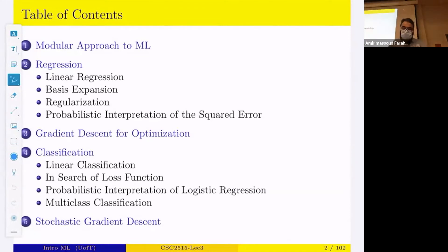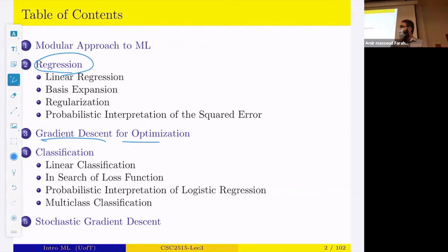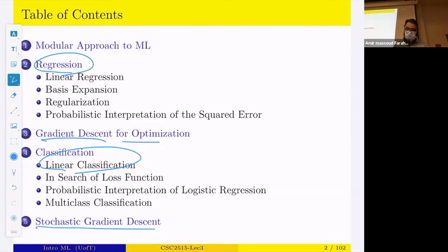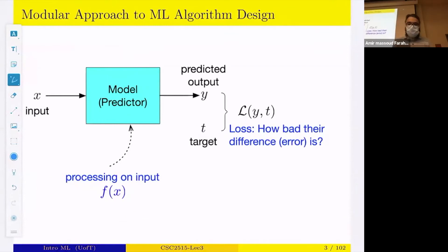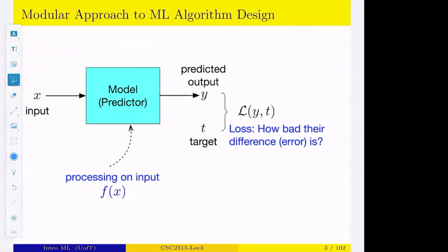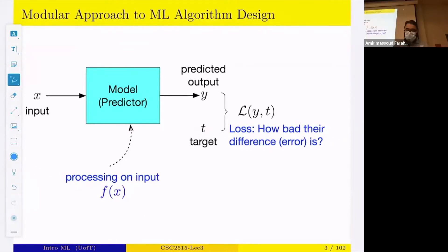Today I'll talk about regression: linear regression, basis expansion, and regularization, then briefly cover gradient descent for optimization, and move on to classification. We'll discuss linear classification, how to define a loss function for classification, and at the end, stochastic gradient descent. Let me move a bit ahead and then we'll have time for questions.